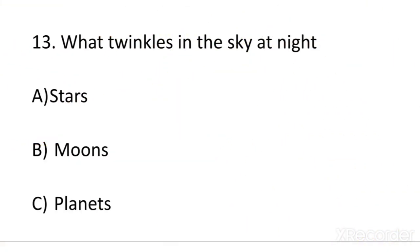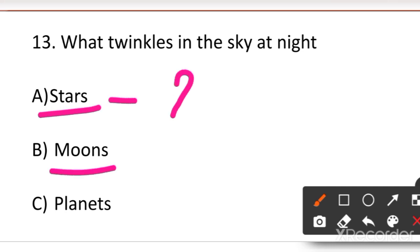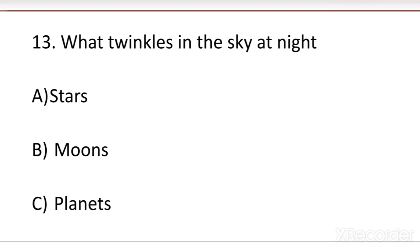Next question: what twinkles in the sky at night? When you look at the night sky, not everything you see is a star. Some are satellites, and some are other celestial bodies that reflect sunlight. You don't see the sun at night because it's on the other side, but in space everything is lit up. Some things twinkle and some don't. Your options are: stars, moons, or planets. You can also see planets like Venus in the night sky.